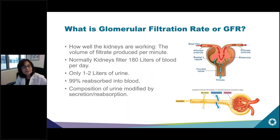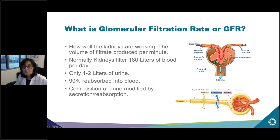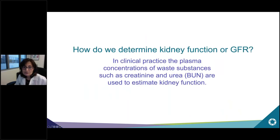The kidney modifies urine composition by either secreting certain things like potassium or reabsorbing other components. How well the kidney is filtering is the glomerular filtration rate. In clinical practice, the plasma concentrations of waste substances such as creatinine and urea — or BUN — are used to estimate kidney function. These waste products make sense: if the kidney is working right, it gets rid of them and levels are low; if the kidney isn't working right, these levels become elevated.